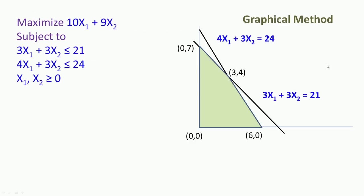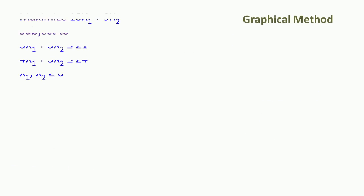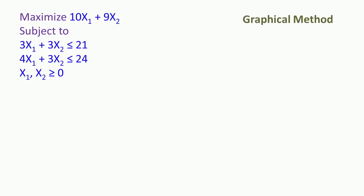In this class we summarize the graphical and algebraic methods and relate the two methods which are popular to solve linear programming problems. We started with a maximization problem and solved it using the graphical method, and then in another class we took a minimization problem and solved it using the graphical method. In the last two classes we solved the same two examples — one for maximization and one for minimization — using the algebraic method.